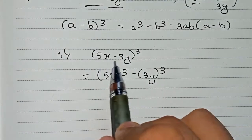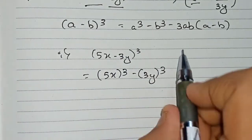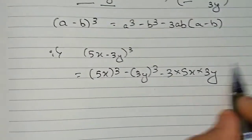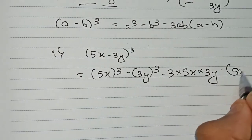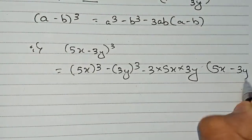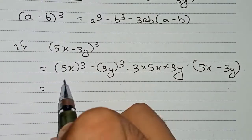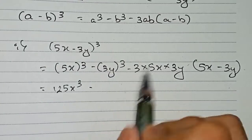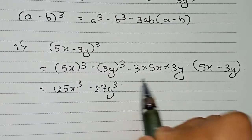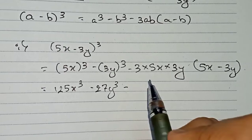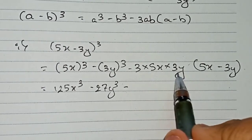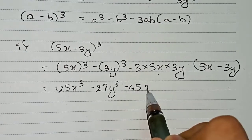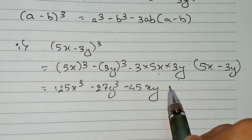So minus 3 into 5x into 3y, in bracket a minus b, that means 5x minus 3y. Now 5 to the power 3 becomes 125x cube, minus 3 to the power 3 becomes 27y cube. Then 5 into 3 is 15, and 15 into 3 is 45, so we get minus 45xy into 5x minus 3y.